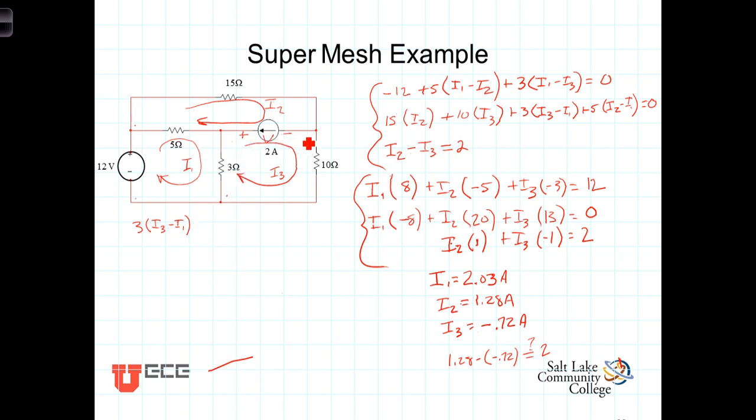Now, going across this current source with the voltage as referenced, plus to minus, that represents a voltage drop, so it would be plus V. Now, coming down across here, that would be plus 10 times I3 equals, back to where we started from, 0.